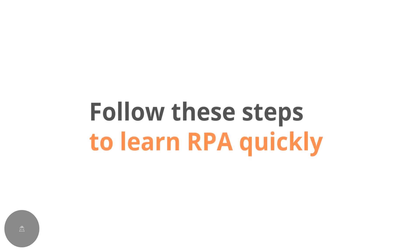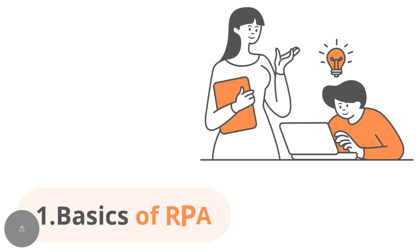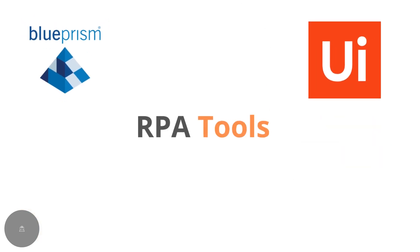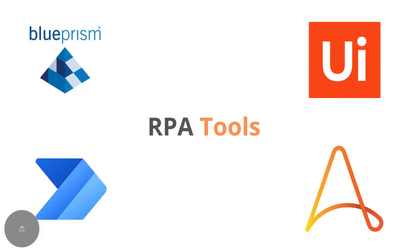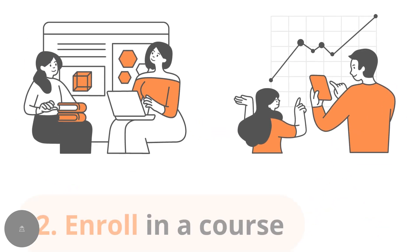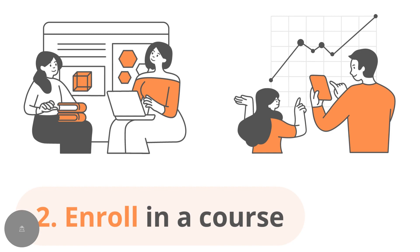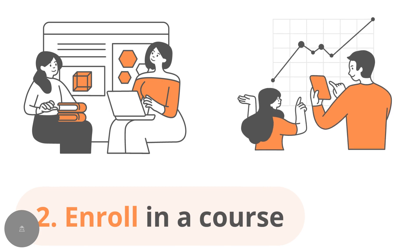Now let's move on to the tips for learning RPA quickly. First, start familiarizing yourself with the basics of RPA and its various tools and technologies such as UiPath, Automation Anywhere, Blue Prism, and Power Automate. Then, enroll in an online course or training program to get a structured learning experience. This can help you learn the concepts more effectively and efficiently.